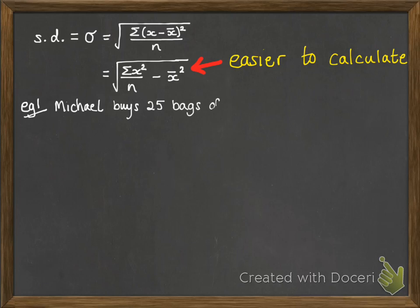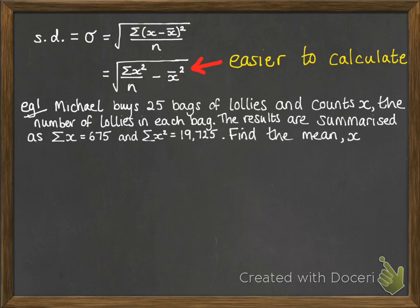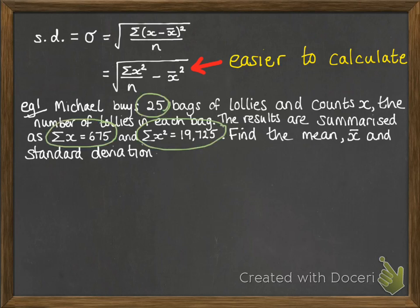Let's have a look at it with an example. So Michael buys 25 bags of lollies and counts x, the number of lollies, in each bag. And the results are summarized so that we know that the sum of x is 675. So if we added up all the lollies in all the bags, it would get 675.